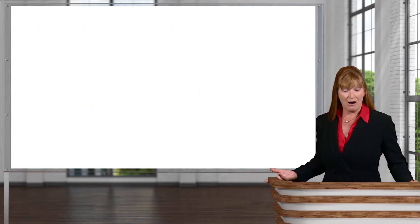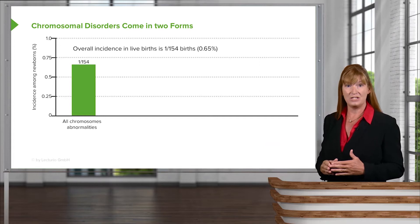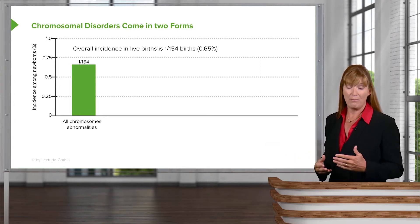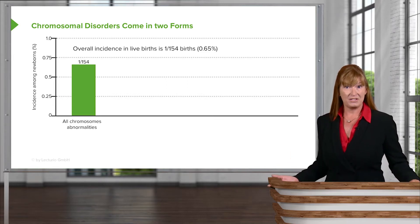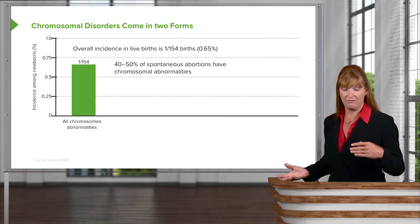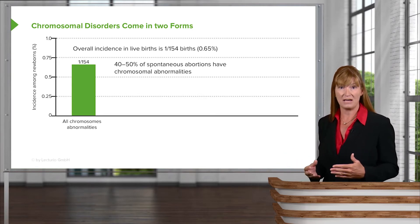So moving now on to looking at chromosomal disorders in general, chromosomal abnormalities. They have a frequency of about 1 in 154 births. That's live births.